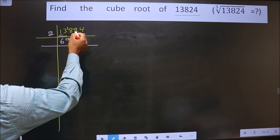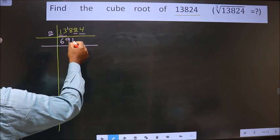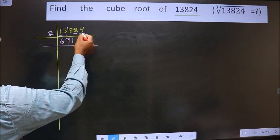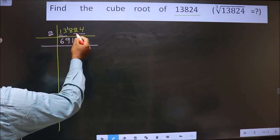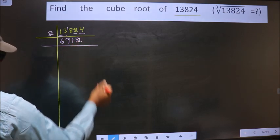When do we get 18 in the 2 table? 2 nines are 18. Next digit is 2 — 2 ones are 2. Next number is 4 — 2 twos are 4. So 13824 ÷ 2 = 6912.